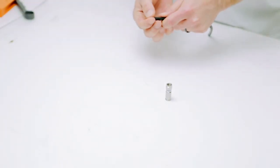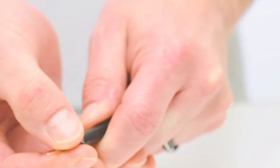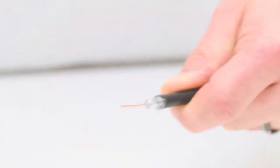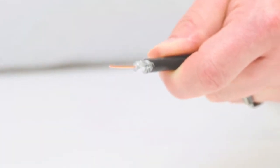Then I need to fold back the braided shield and slide on the connector. With compression connectors it is essential that the connector is all the way onto the jacket.